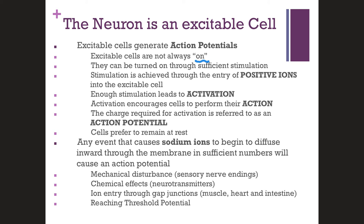The way we stimulate excitable cells is by allowing the entry of positive ions into the cell. Positive ions increase the charge of a cell and make it more likely to perform its action. When a cell is activated, it will perform its designated activity. For neurons, that action is to make and then release neurotransmitter. The charge at which they will perform their action — release neurotransmitter — is referred to as the action potential.